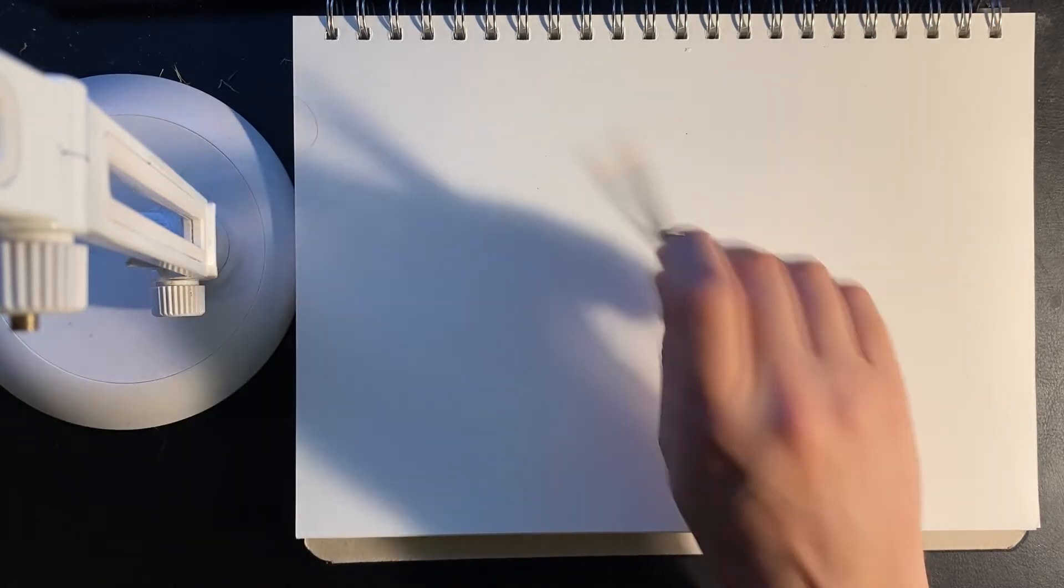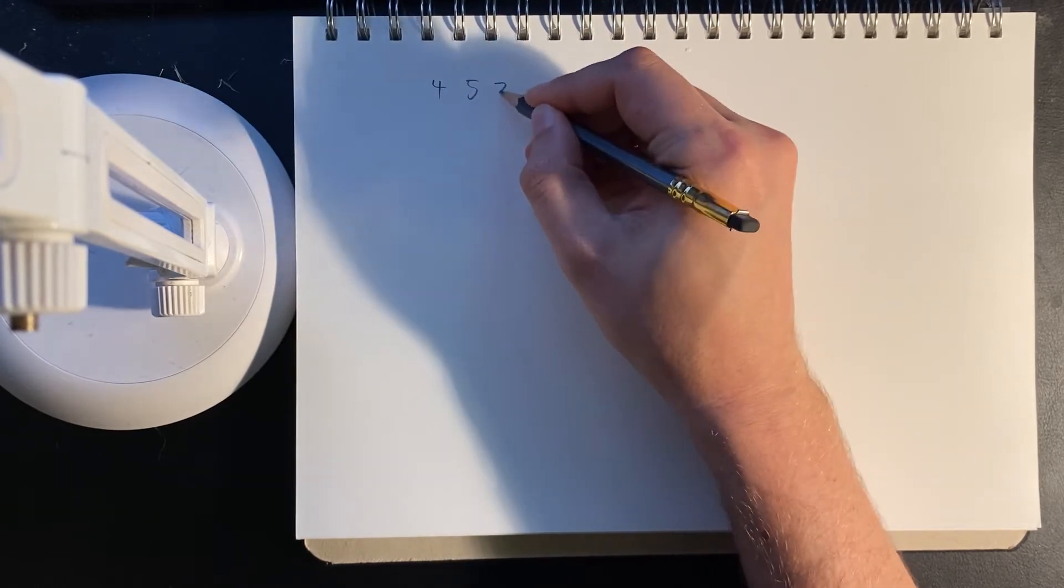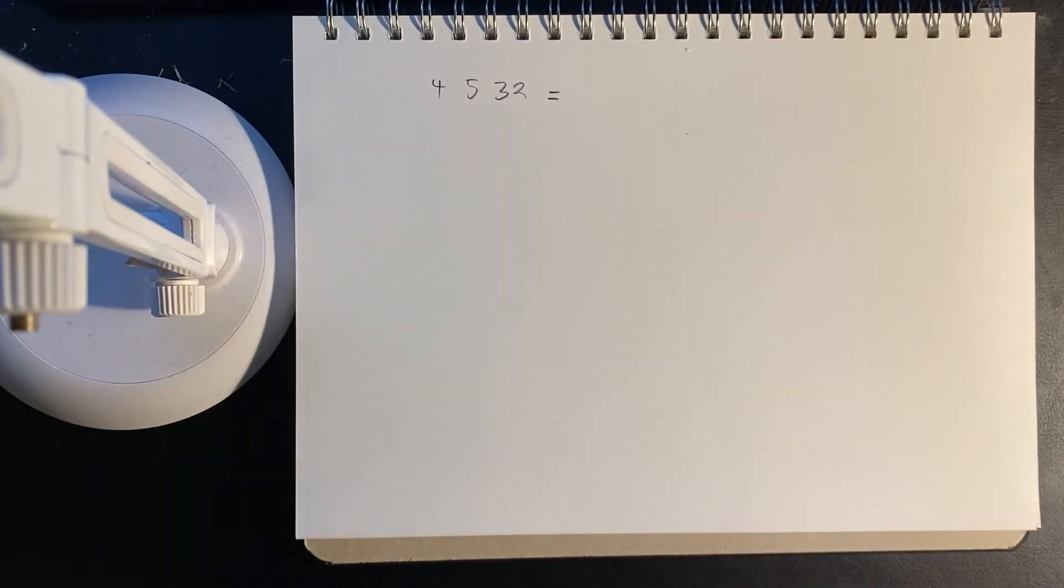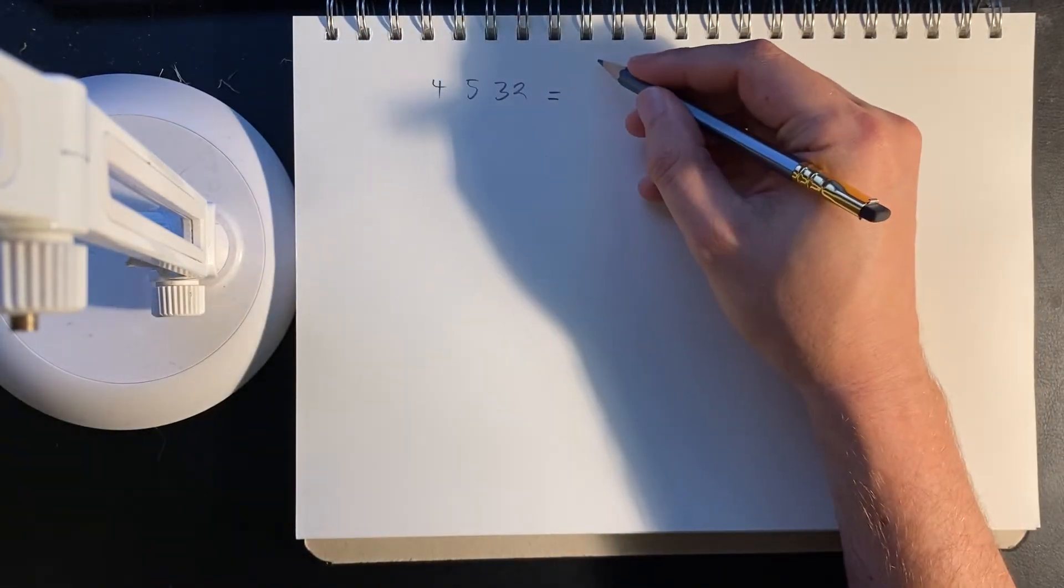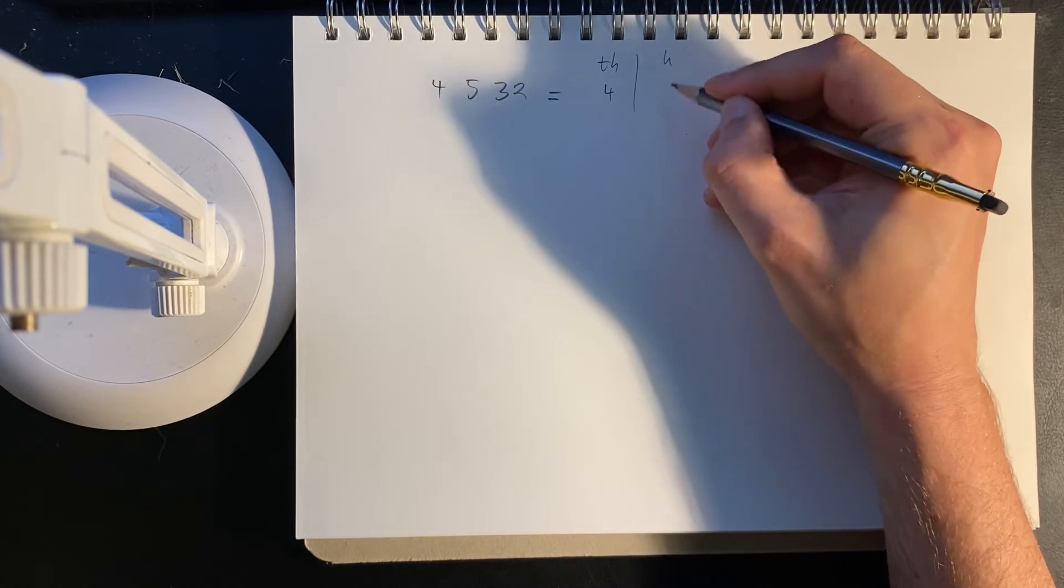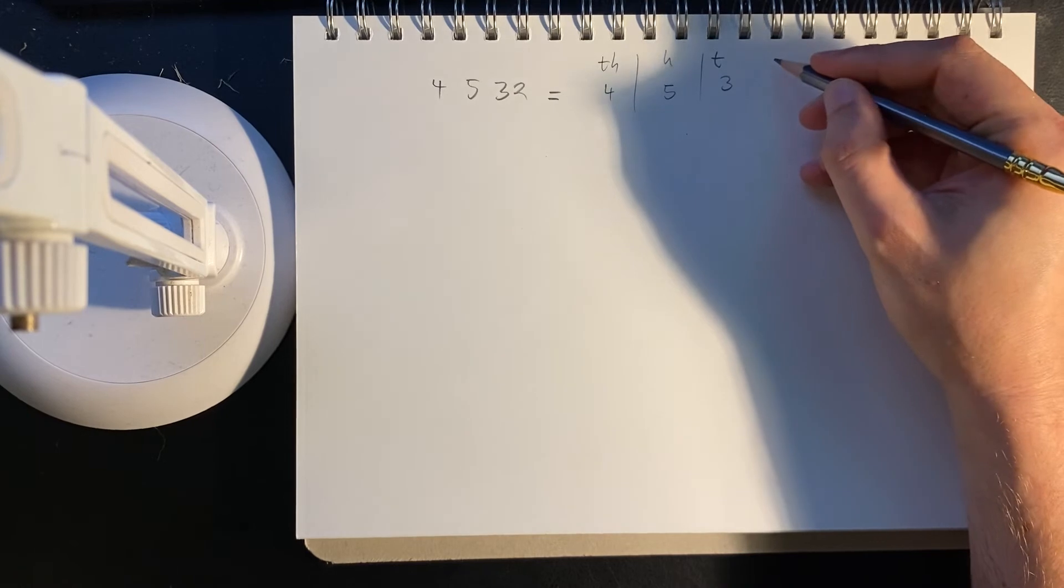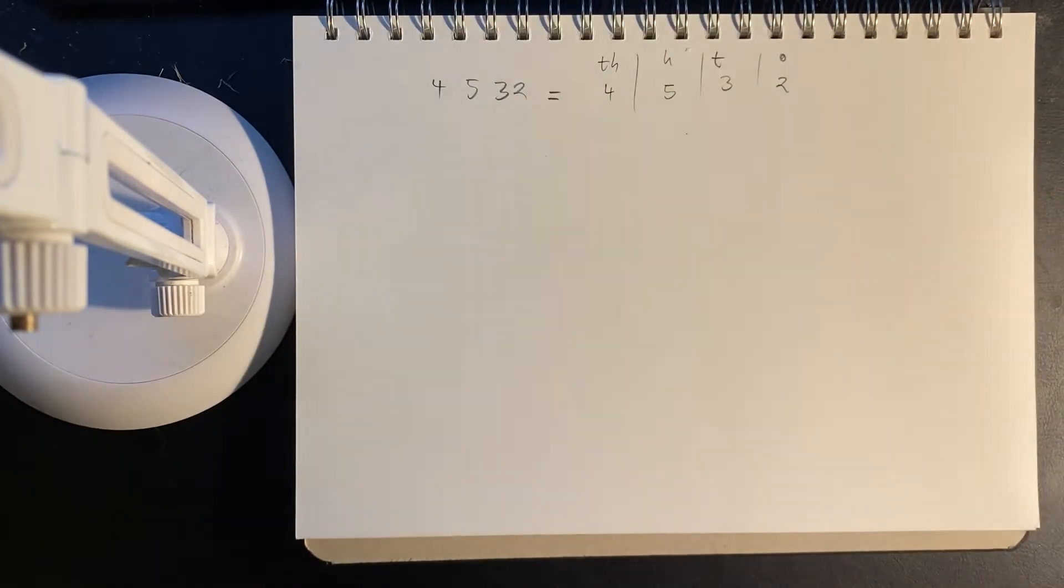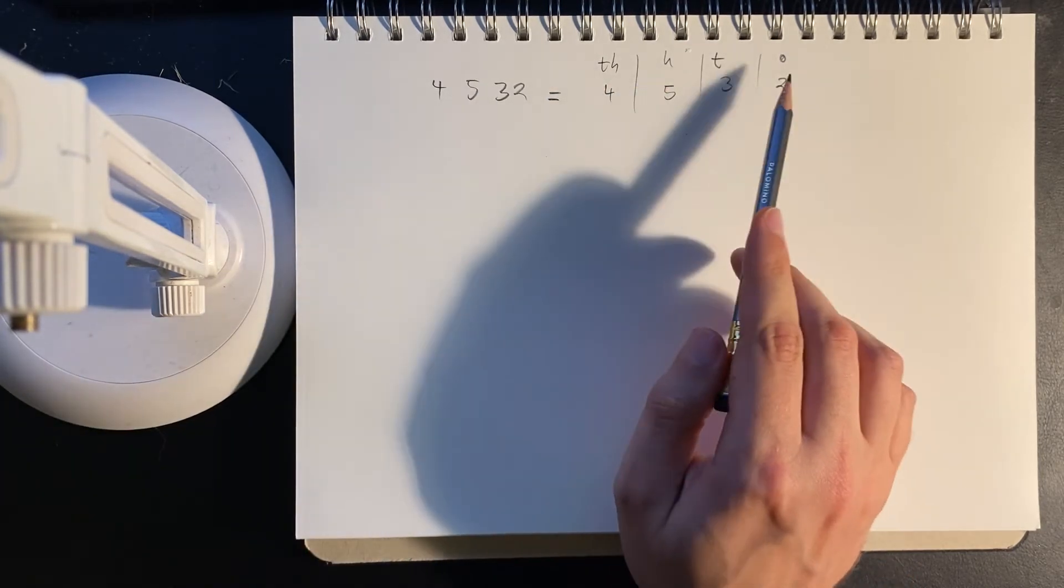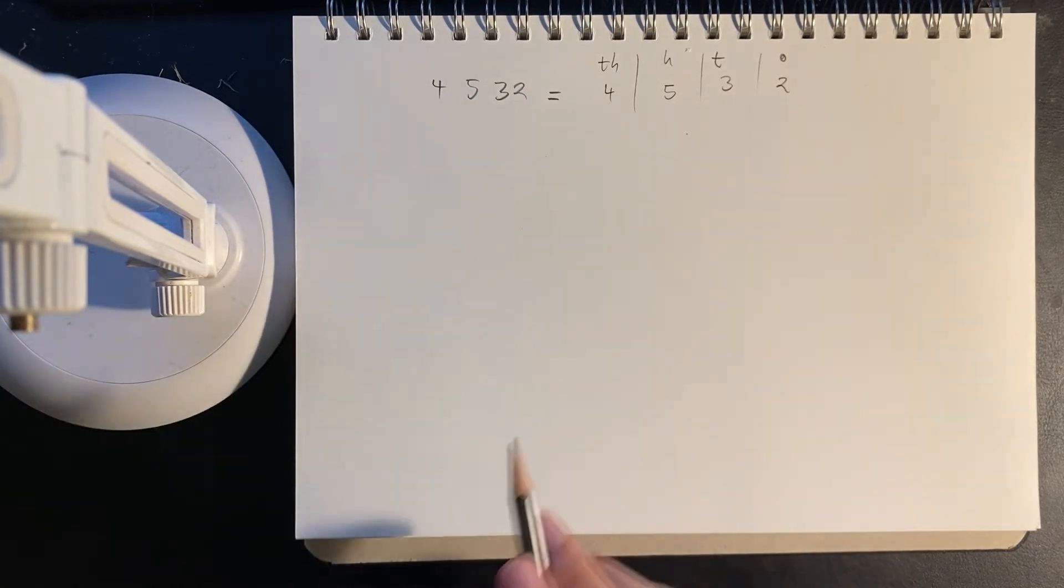Consider the decimal number 4,532. This can be decomposed into place value. We have 4 thousands, 5 hundreds, 3 tens, and 2 ones. Each digit is a factor of 10 compared to the previous.